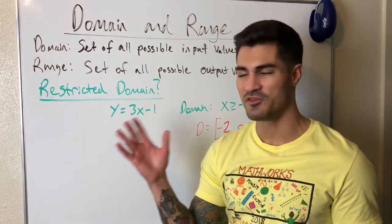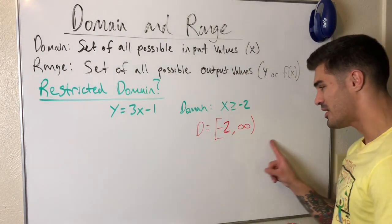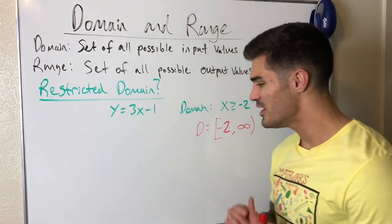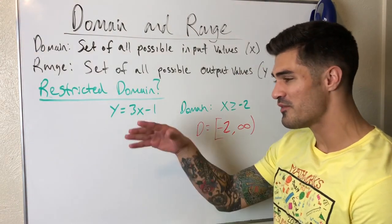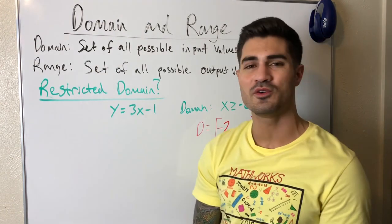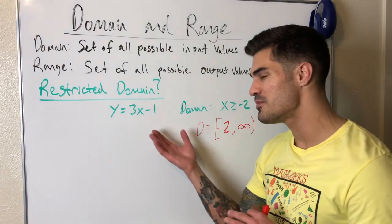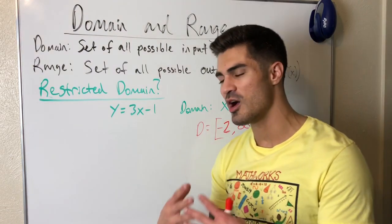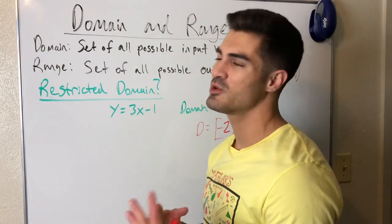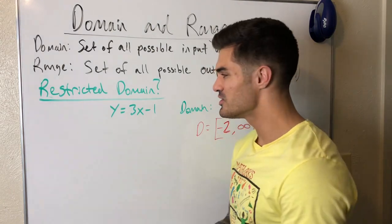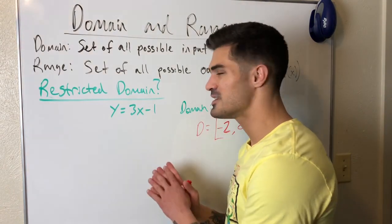You could graph this from x equals negative 2 all the way up to infinity, visually see where the y-values are going, and write that as an interval — that works fine. But when examples get more complicated it gets more tedious. There's actually a simpler, easier way to do it, and I'm going to share that with you right now. First, we need to find out: is this function increasing or decreasing?